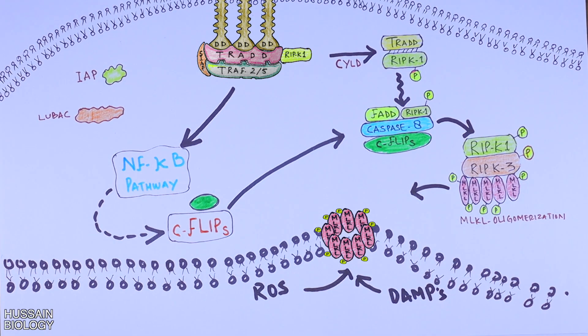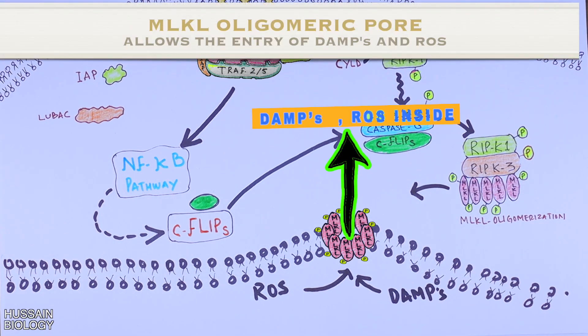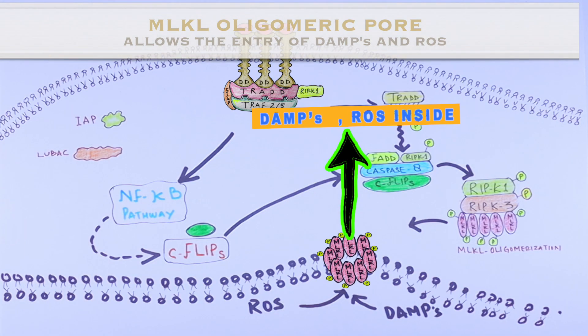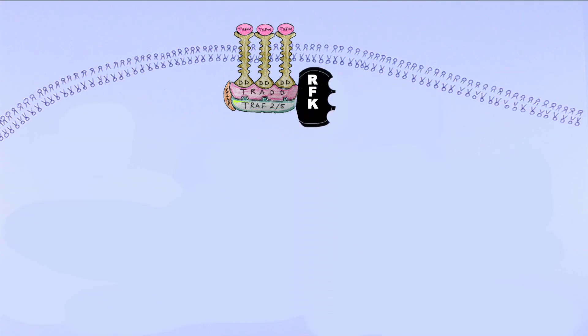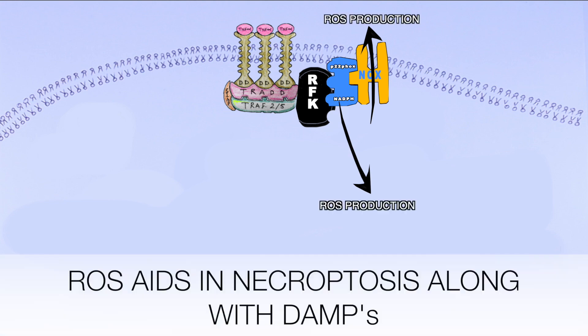This pore allows for the entry of DAMPs and ROS, which eventually leads to cell death. This is how necroptosis is accomplished. Also remember, during the process of necroptosis, the TNFR1 crosstalks with riboflavin kinase, which then interacts with many different proteins like P22FOX and NOX proteins to get functional NADPH oxidase, which then eventually generates ROS that also adds to necroptosis.